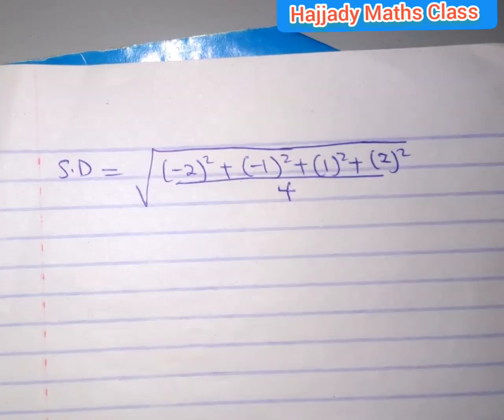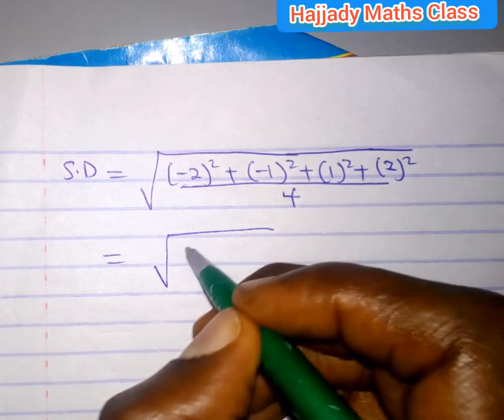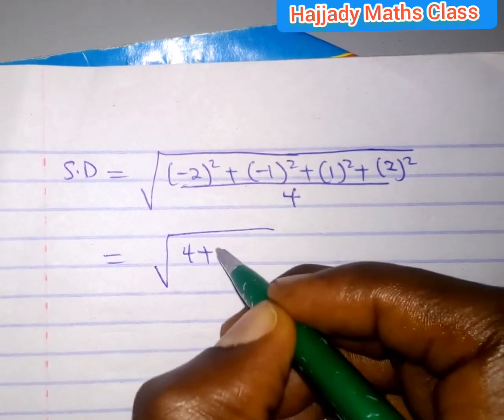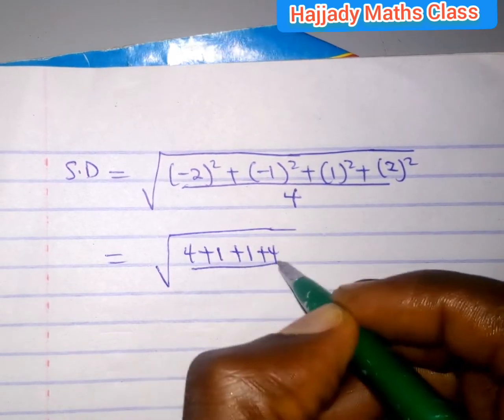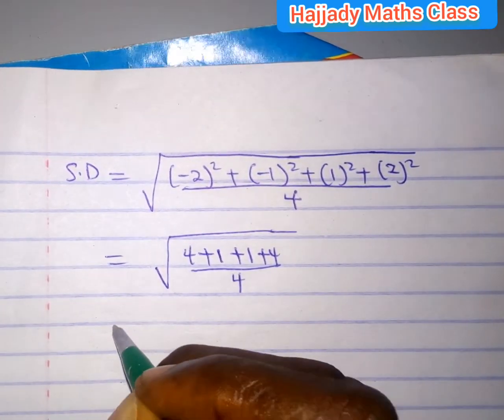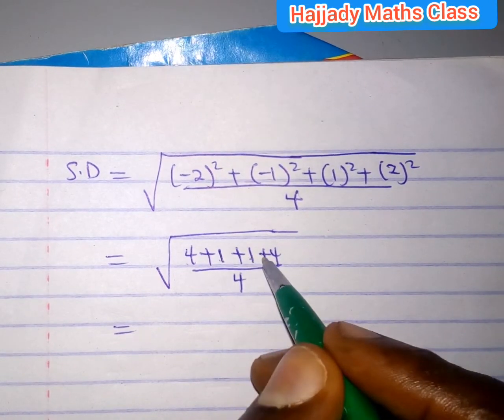Finally, we have 4 plus 1, 5 plus 1, 6 plus 4, 10. So we have square root of 10 over 4. And finally, our standard deviation is 5 over 2.